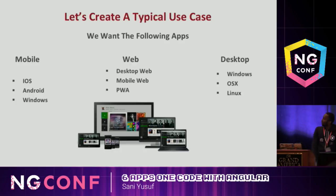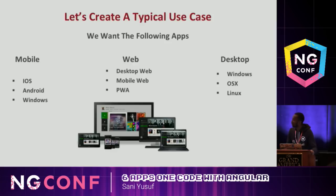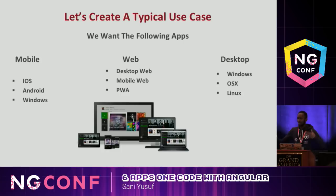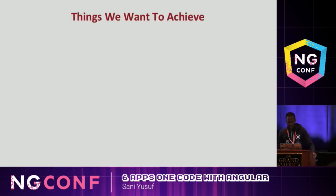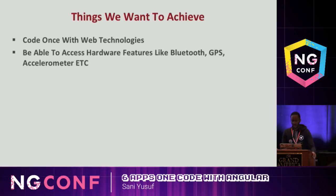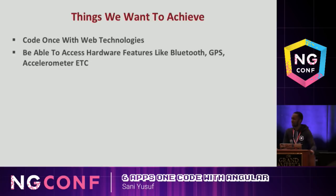So let's create this fictional billion-dollar use case. We have this application we want to create - we want to support iOS, Android, and Windows Phone for grandma and grandfather. Desktop applications, responsive mobile web, PWA, Windows, OSX, and Linux. So let's solve the mobile problem first. Things we want to achieve: coding once with web technologies, and being able to access hardware features like Bluetooth, GPS, and all of that. The biggest problem with the web is access to device features.